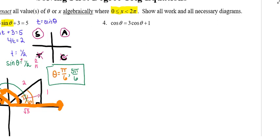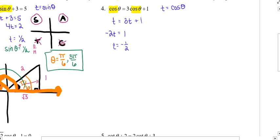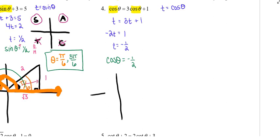I'm going to shoot on to number 4. In this one, my trig function is cosine, so I'm going to let the variable t represent cosine of theta. So I've got t equals 3t plus 1. I'm going to subtract 3t from both sides, making the left side negative 2t and the right side 1. Dividing both sides by 2 gives me t equals negative one half. Once I solve, I'm going to replace t with my trig function: cosine of theta equals negative one half.